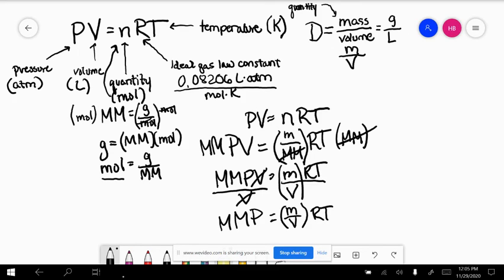Remember, mass over volume is density. So let's rearrange and replace. So I'm up here again. Molar mass times pressure is equal to density times the ideal gas law constant times temperature.